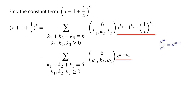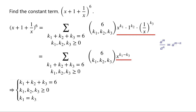As we want to find the constant term, which is independent of x, the exponent of x must be equal to 0. That is, k1 minus k3 equals 0, so k1 equals k3. Now we have a system of equations: k1 plus k2 plus k3 equals 6, with k1, k2, and k3 being non-negative integers, and k1 equals k3.